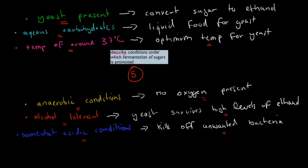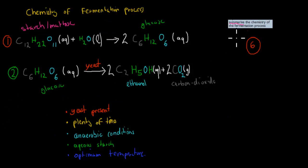It should be somewhat acidic conditions because that helps us to kill off unwanted bacteria. Otherwise, the ethanol can be turned into vinegar. Summarize the chemistry of the fermentation process. We start with starch or maltose. We add water. When we add water to starch or maltose, we can produce two glucose molecules. Those glucose molecules can then be fermented in the presence of a yeast to produce two ethanol and two carbon dioxide. That's the summary of the chemistry of the fermentation process. Remember, we need to have yeast present, plenty of time, anaerobic conditions, aqueous starch, and optimum temperatures.